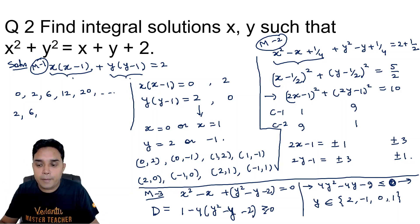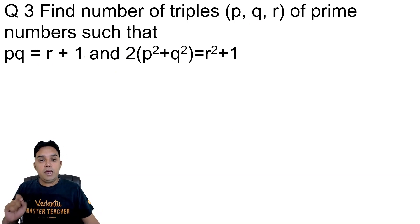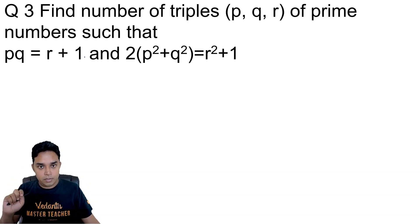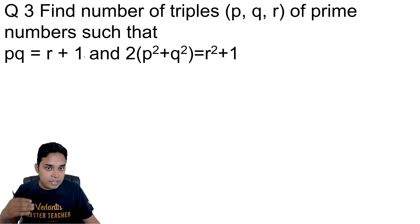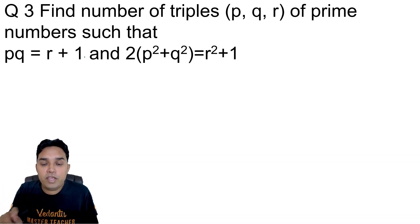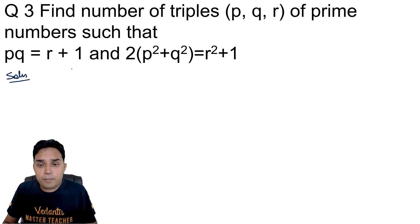The next question: find the number of triples (p, q, r) of prime numbers such that pq equals r plus 1, and 2p² plus q² equals r² plus 1. There are three prime numbers and two equations, so there might appear to be infinite solutions, but the additional condition that they are prime numbers limits this. All prime numbers are odd except 2.